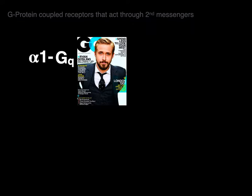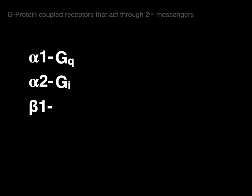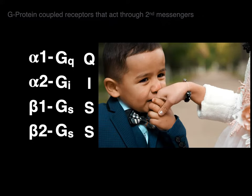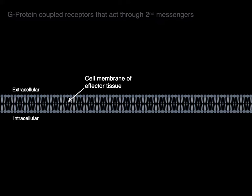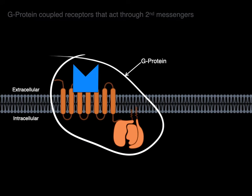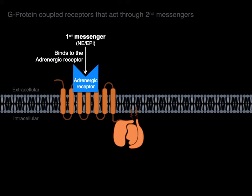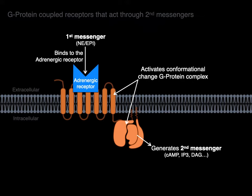G-protein coupled receptors act through second messengers. The alpha-1 adrenergic receptor is linked with the G-Q family of proteins, alpha-2 with the G-I family, and beta-1 and beta-2 with the G-S family — remembered by the KISS abbreviation but with a Q. Here is a cell membrane of an effector tissue with a G-protein spanning from the extracellular to the intracellular component, with an adrenergic receptor on the outside. When a first messenger like norepinephrine binds, it activates a conformational change in the G-protein complex, which generates a secondary messenger triggering a cascade of physiological events inside the cell.